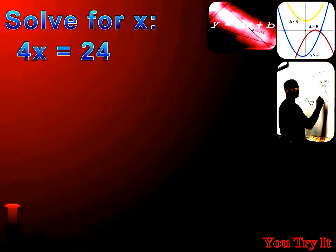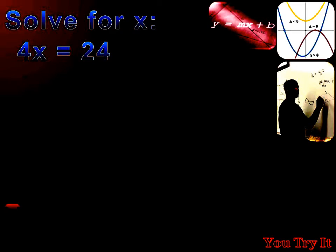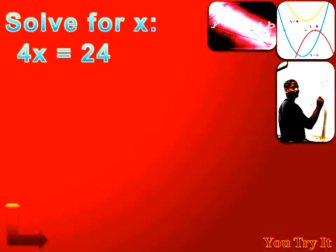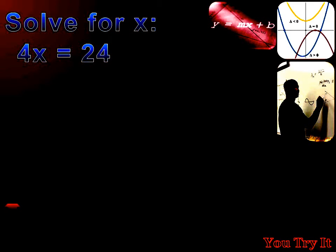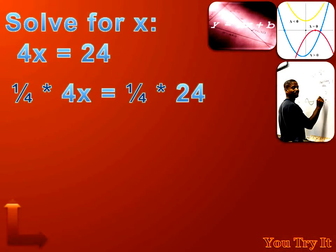You try this one. Hit the pause button, try the problem, and then hit the forward key to move on to my answer. Solve 4x equals 24 for x — we want it to read x equals something, so we need to get rid of that 4. One way to get rid of a coefficient is to multiply by the reciprocal. Multiplying both sides by 1 fourth, on the left side 1 fourth times 4 equals 1, leaving just x. On the right side, 1 fourth times 24 equals 6. So x equals 6.